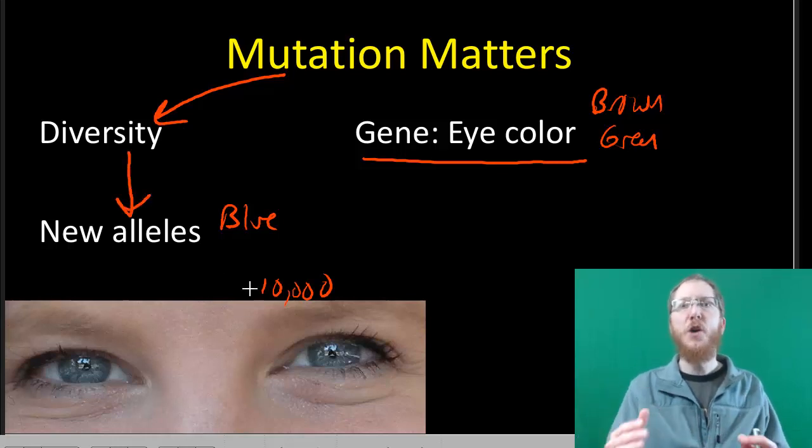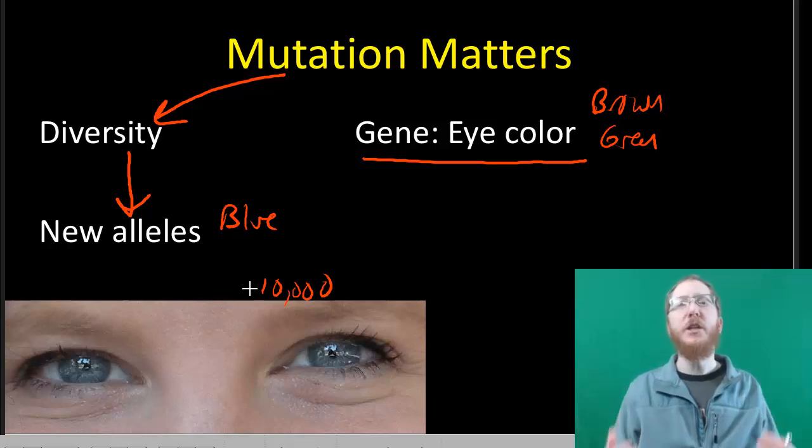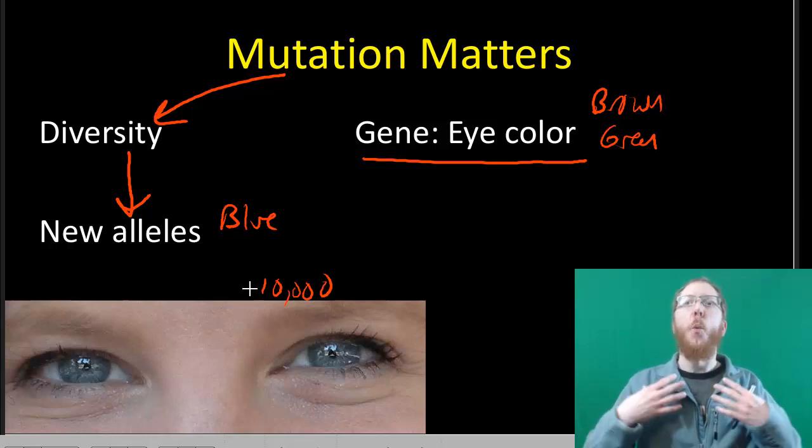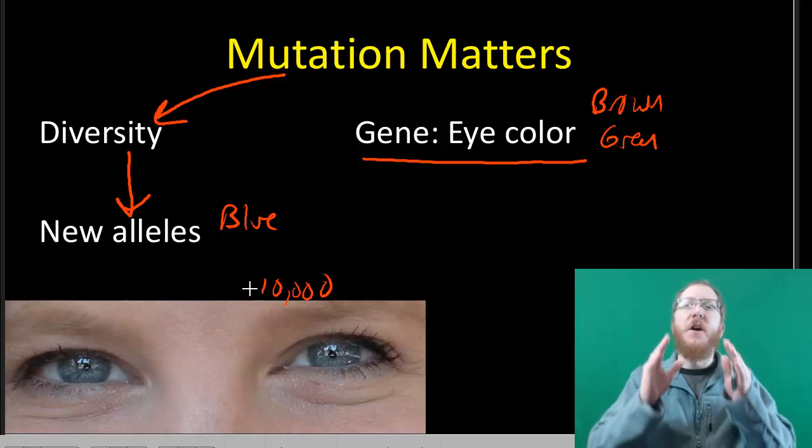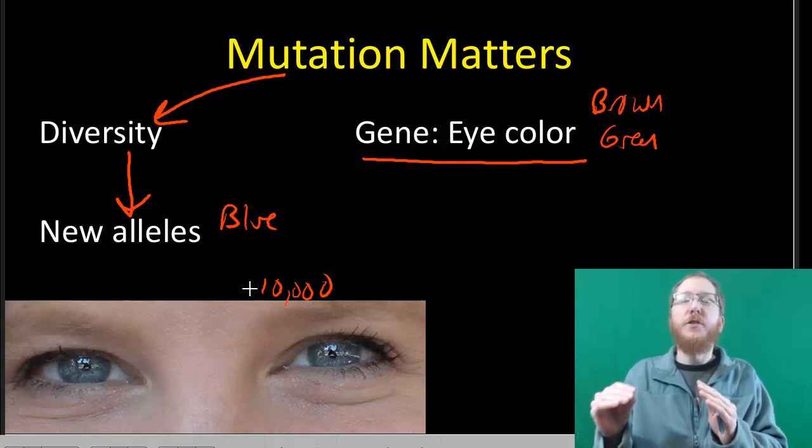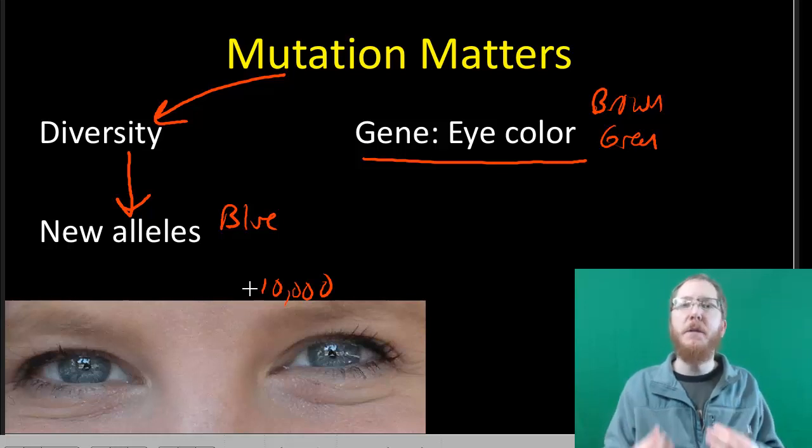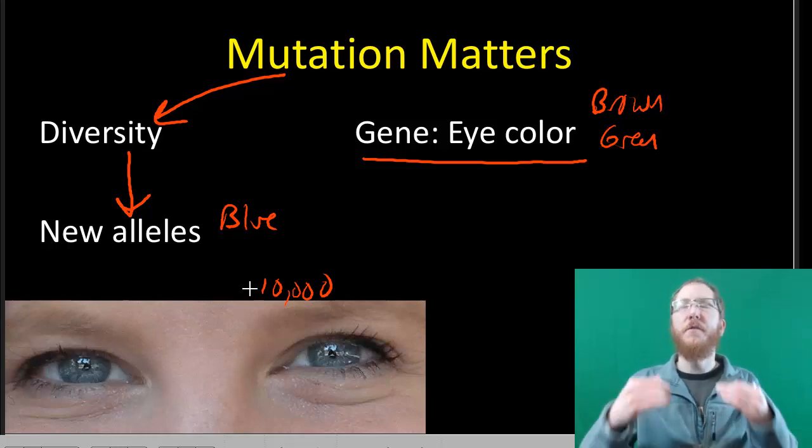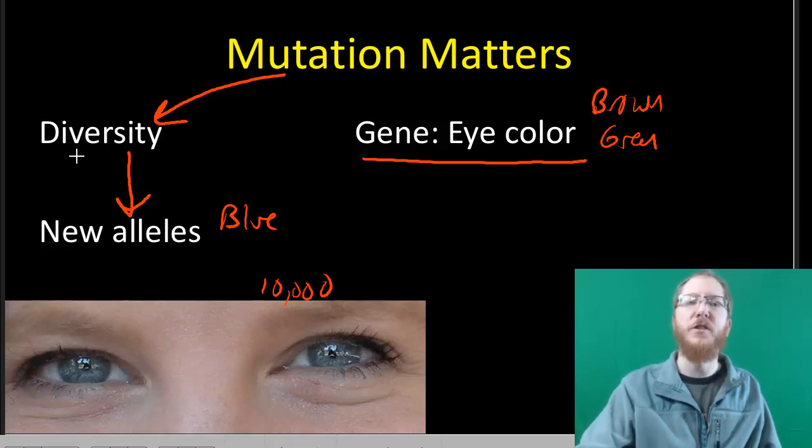Mutations can cause us to get diversity because they can lead to these new alleles. Each new allele we have is like adding a tool to our toolkit, so that when the environment changes, which it will indefinitely over time, we have to adapt. It's important for species, important evolutionarily, to make sure that you have mutations to provide for the diversity that we need.